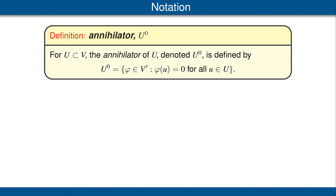If T is a linear map, then we would like to be able to describe the null space and the range of the dual map T prime. To do that, we need the concept of the annihilator of a subset of V. Suppose U is a subset of our vector space V. The annihilator of U, denoted U with a superscript 0, is defined to be the set of linear functionals on V such that phi of u equals 0 for all vectors in U.